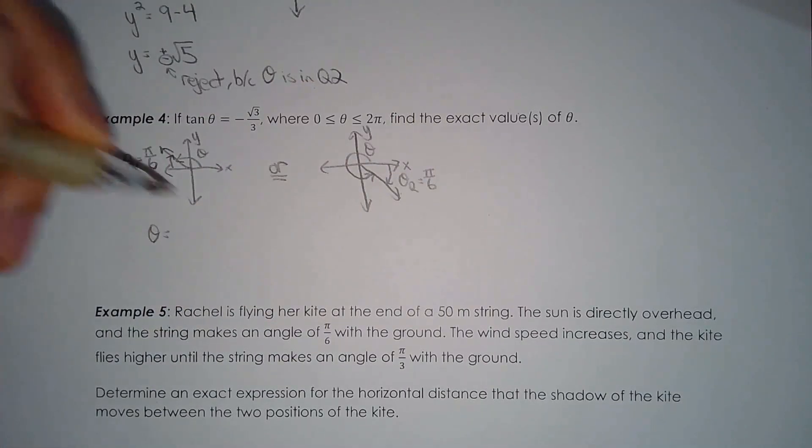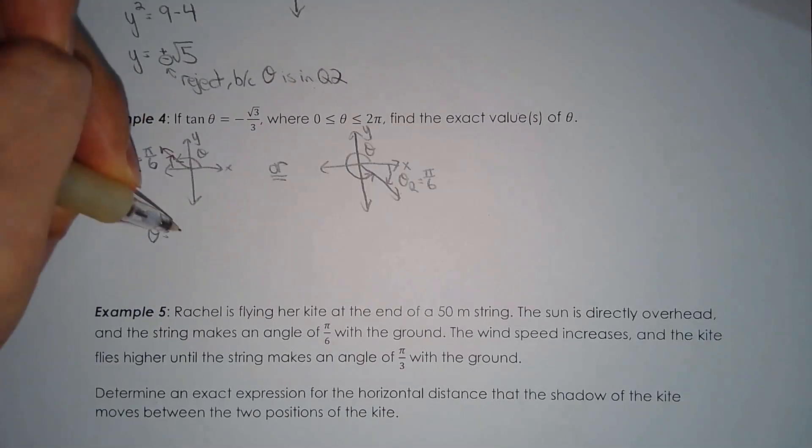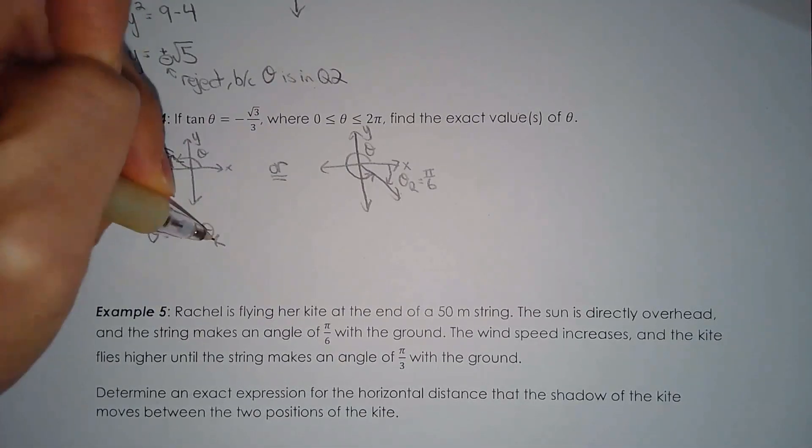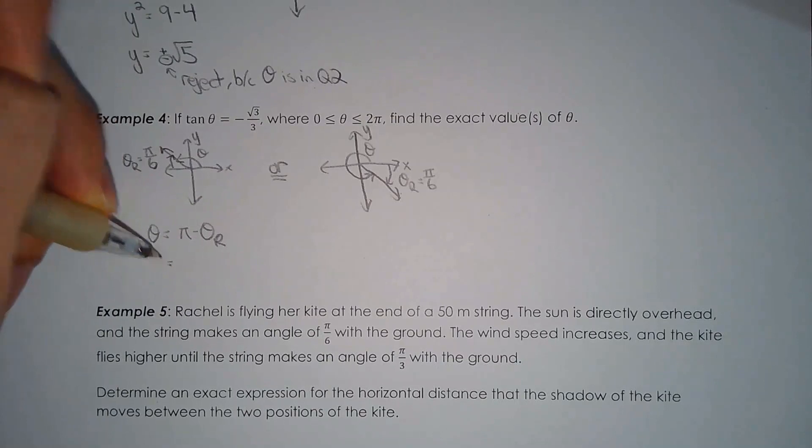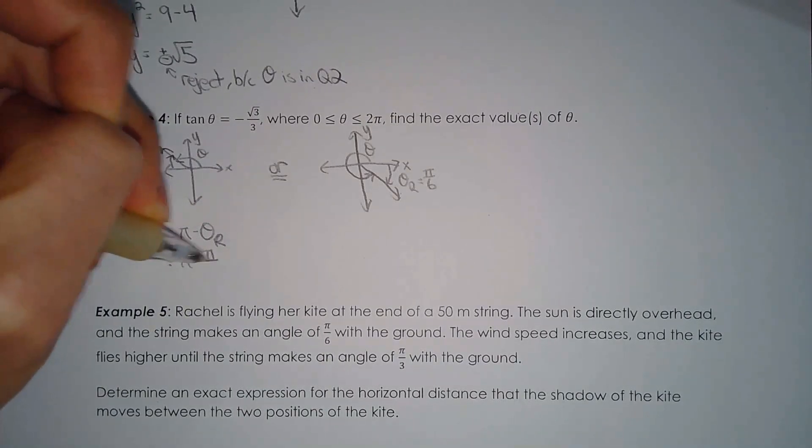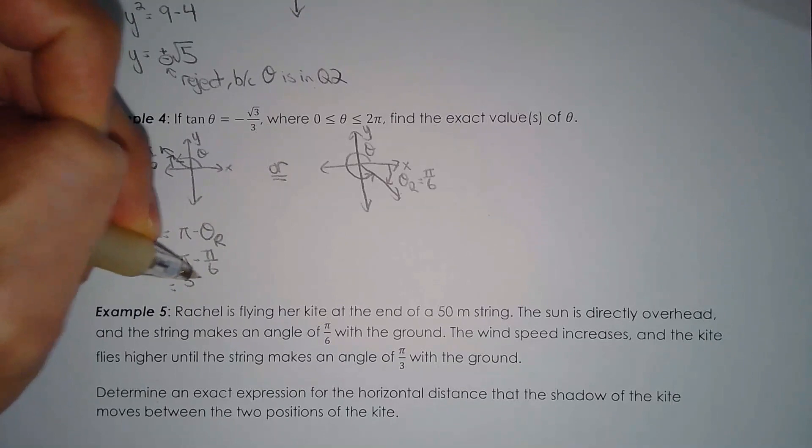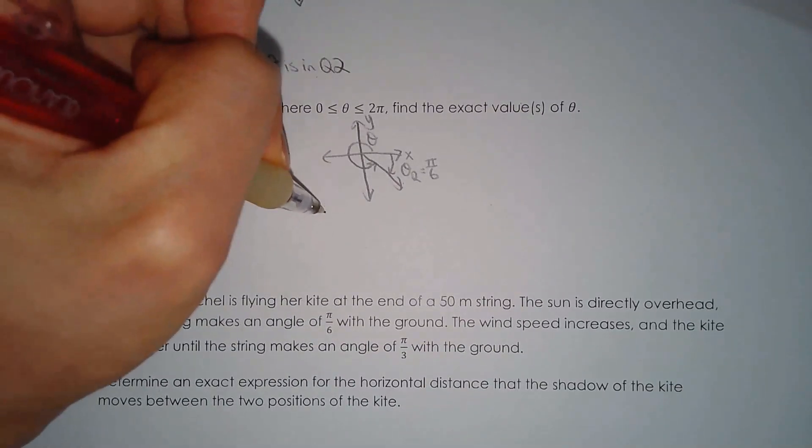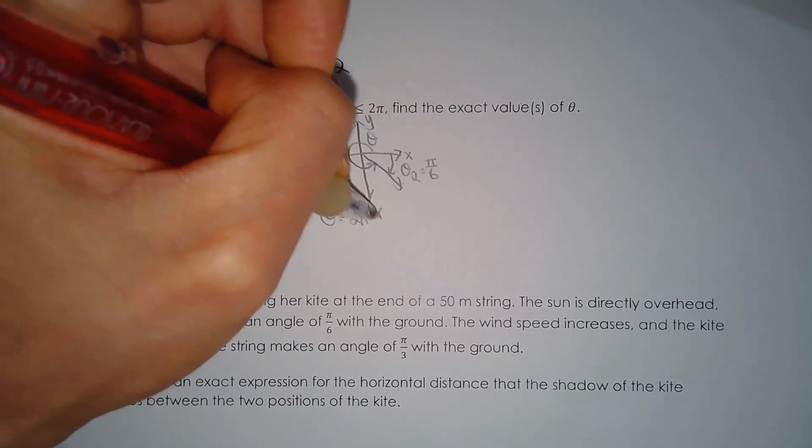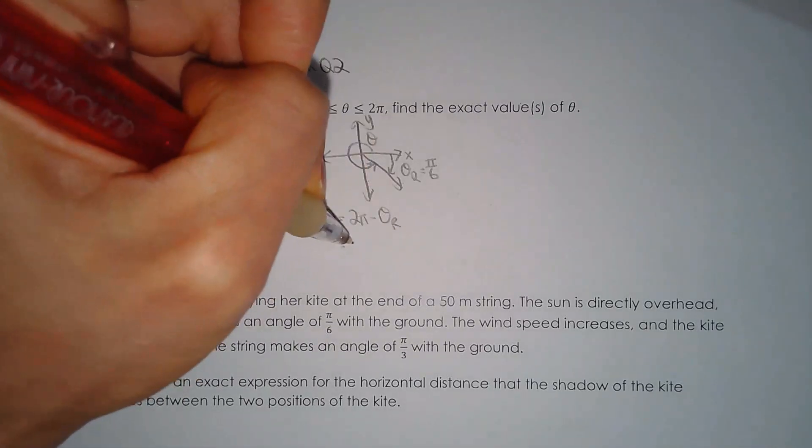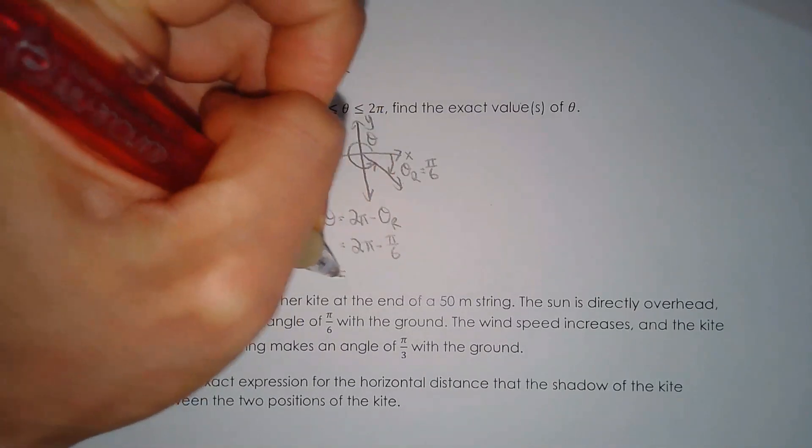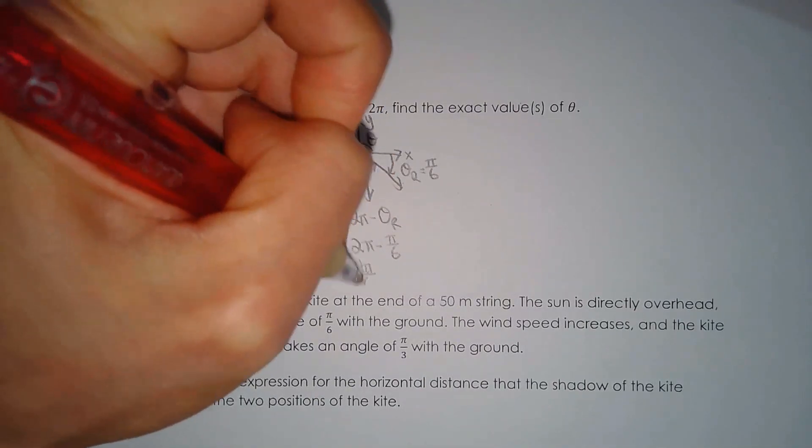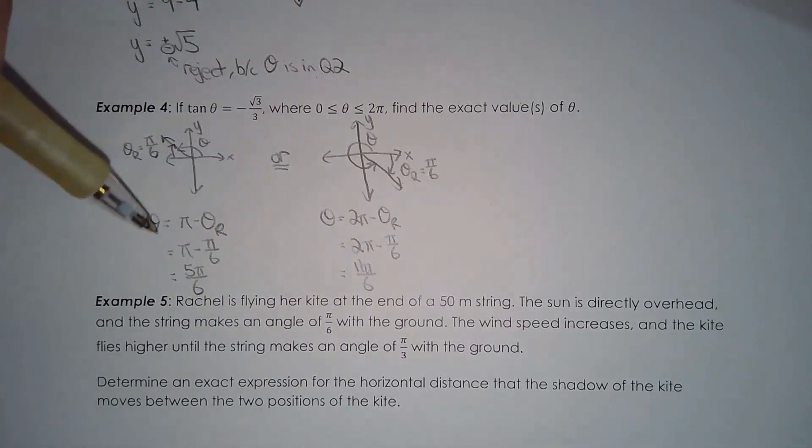So theta is equal to, for the second quadrant angle, it's pi minus reference angle. Since the reference angle is pi over 6, you'll know that the principal angle is 5 pi over 6. The fourth quadrant angle would be 2 pi minus the reference angle, and the reference angle is pi over 6, so you'll get 11 pi over 6. So there are two answers here. Theta could be 5 pi over 6 or it could be 11 pi over 6.